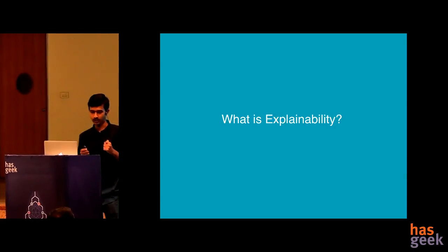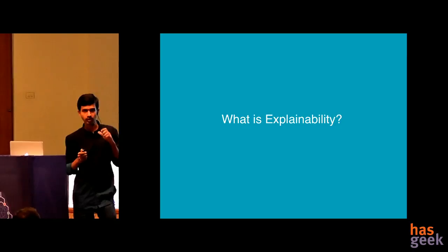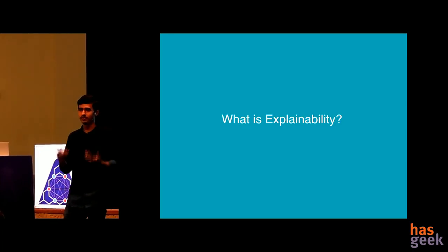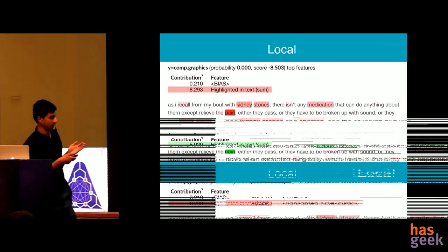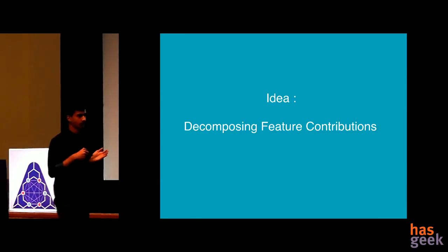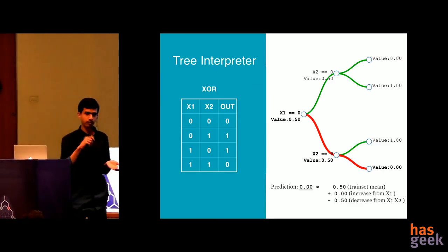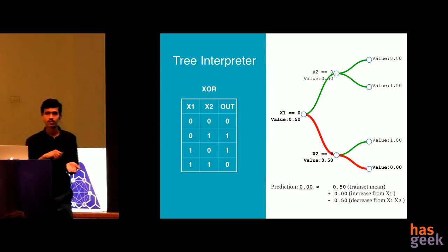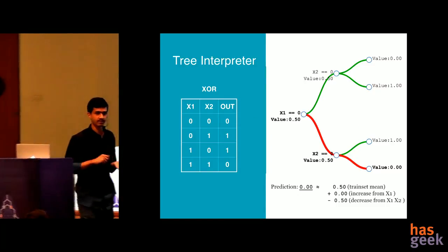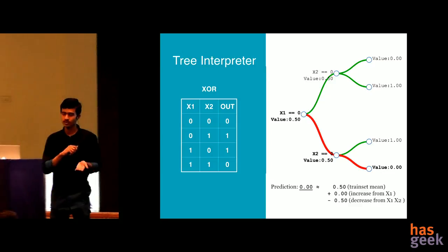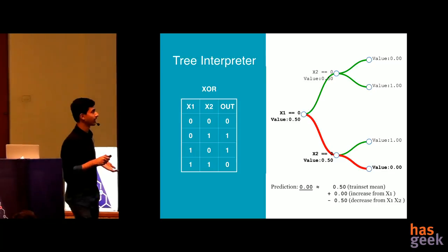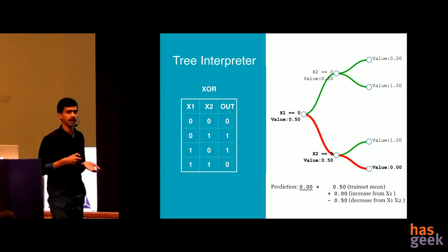So what is explainability? Earlier we saw linear models where you know the function that is being predicted. Now, this is one of the methods of doing that called tree interpreter. Interestingly, this does not have any research paper associated with it. It's just a blog post by a person named Ando. He made this library called tree interpreter as well.